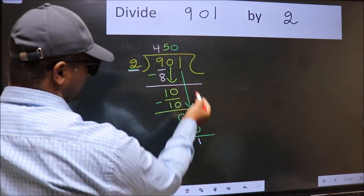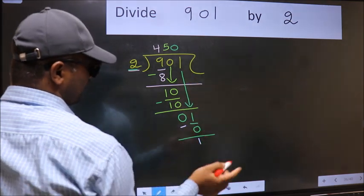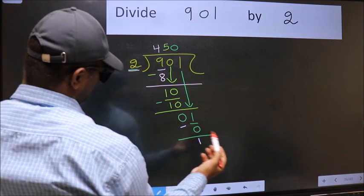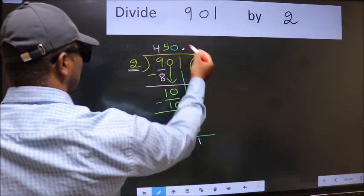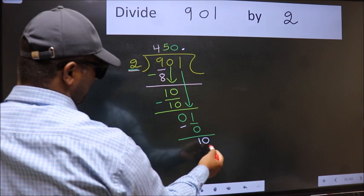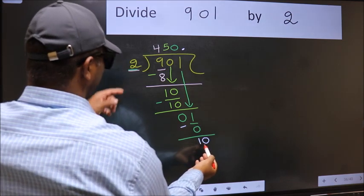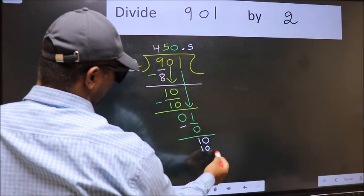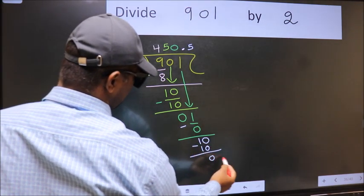Over here, we did not bring any number down. And 1 is smaller than 2. So now we can put dot and take 0. So 10. When do we get 10 in 2 table? 2 fives, 10. Now we should subtract. We get 0.